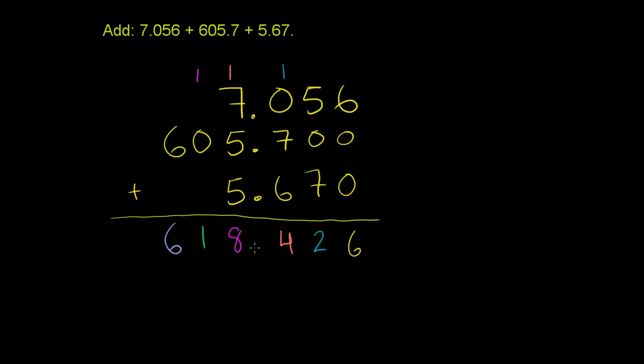And you don't want to forget the decimal. And so when you add the numbers you get 618.426, or 618 and 426 thousandths. And we're done.